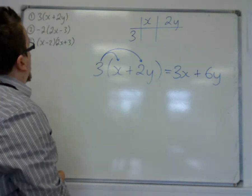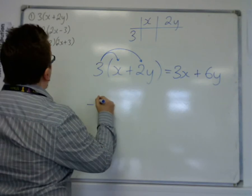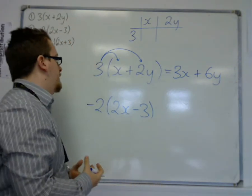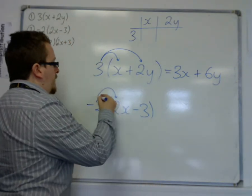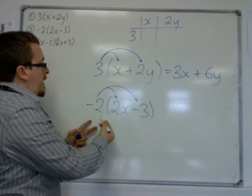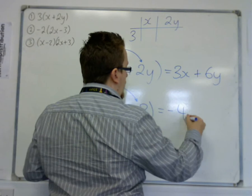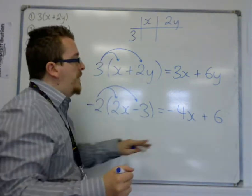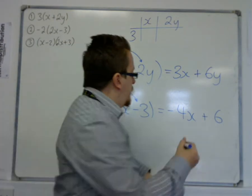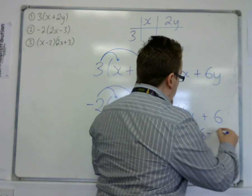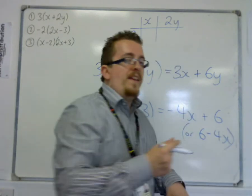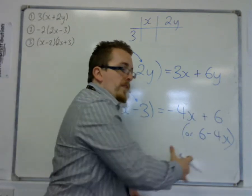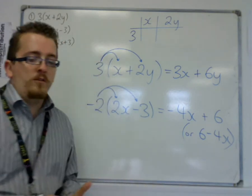The second one, minus two lots of two x minus five, really this is just a case of making sure you're all right with negative numbers and how they multiply. So we have minus two times two x and minus two times minus five. So minus two times two x is minus four x and minus two times minus five is plus six. So this could be written either way around, minus four x plus six or you could write that as six minus four x. And it's this being able to rearrange algebra into different ways, but equivalent ways, that is also an important factor that you must be prepared for.